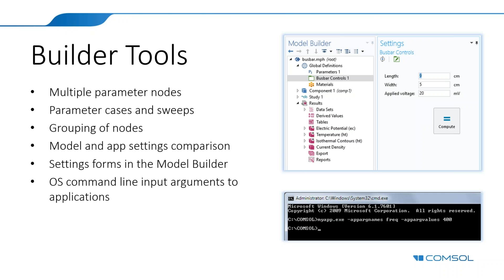In both the model builder and the application builder, you can now compare your current model or application with one saved on disk using a new comparison tool. You use it to track changes in your settings — not in the results, but in the model settings. For example, if you changed something and saw a dramatic change in results but forgot what you changed, you can compare the settings between two different versions of a model. The same functionality is available for applications.